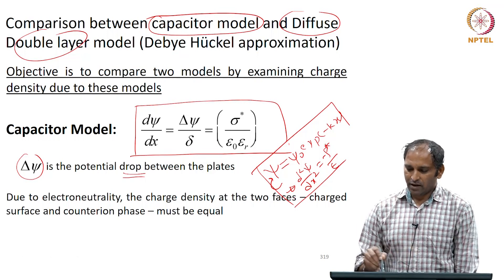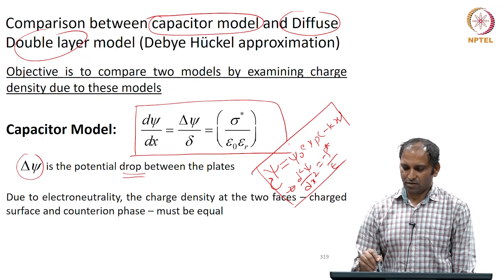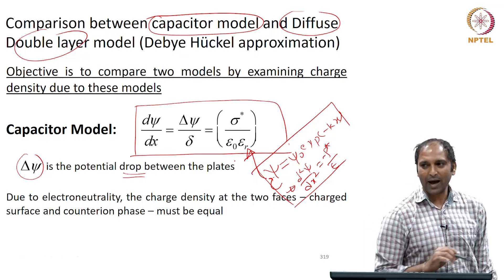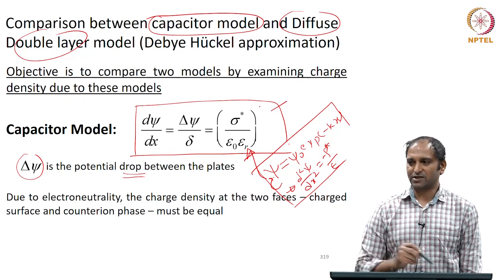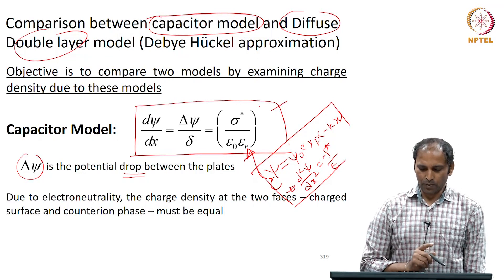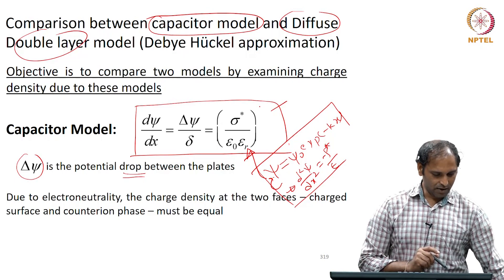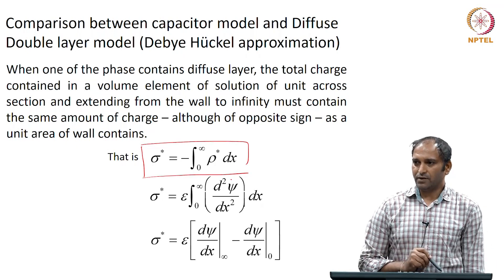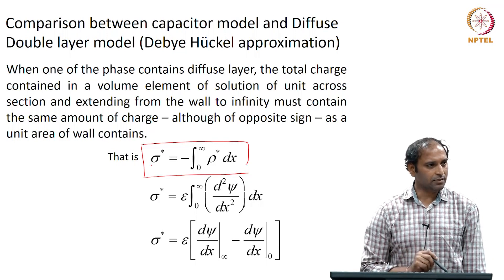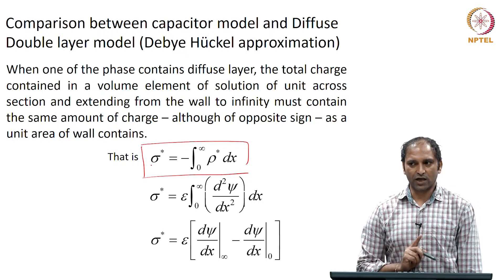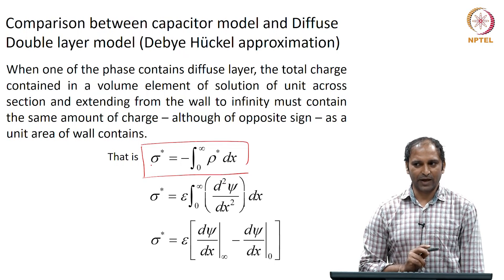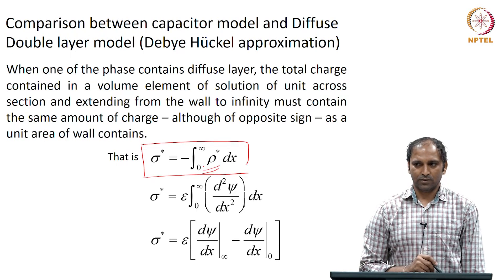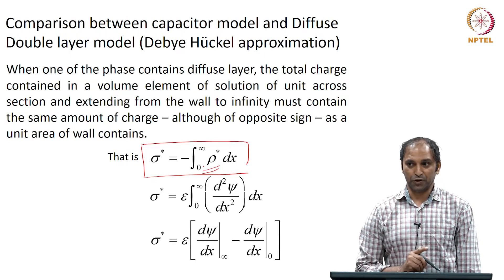I would like to use these expressions and express them in a way that I can compare with the capacitor model. Here I have written the expression for σ*, which is the surface charge density that we had in the capacitor model. And ρ* is the charge density — charge per unit volume in this case.